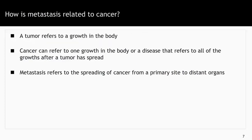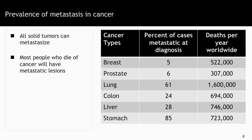How is metastasis related to cancer? A tumor refers to a growth in the body, and cancer itself can refer to one growth in the body or a disease that refers to all of the growths after a tumor has spread. Metastasis refers to the spreading of cancer from a primary site to distant organs. We know that all solid tumors can metastasize. Liquid cancers like leukemia do not metastasize because there is no primary tumor. Most people who die of cancer will die because they have a metastatic tumor or metastatic tumors.